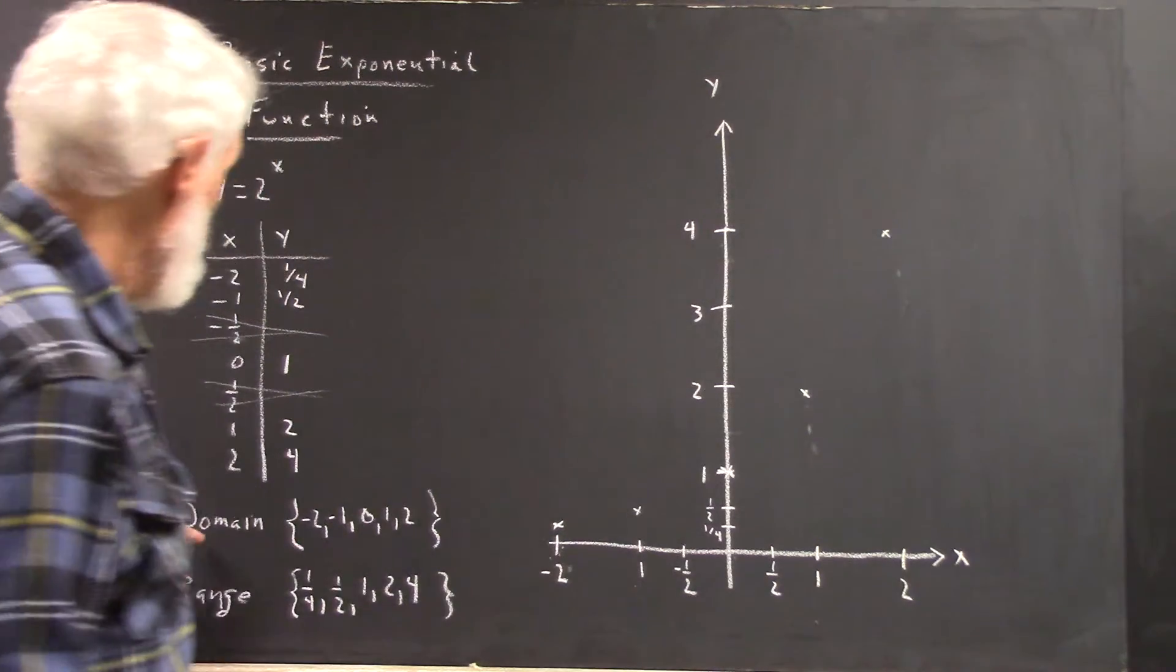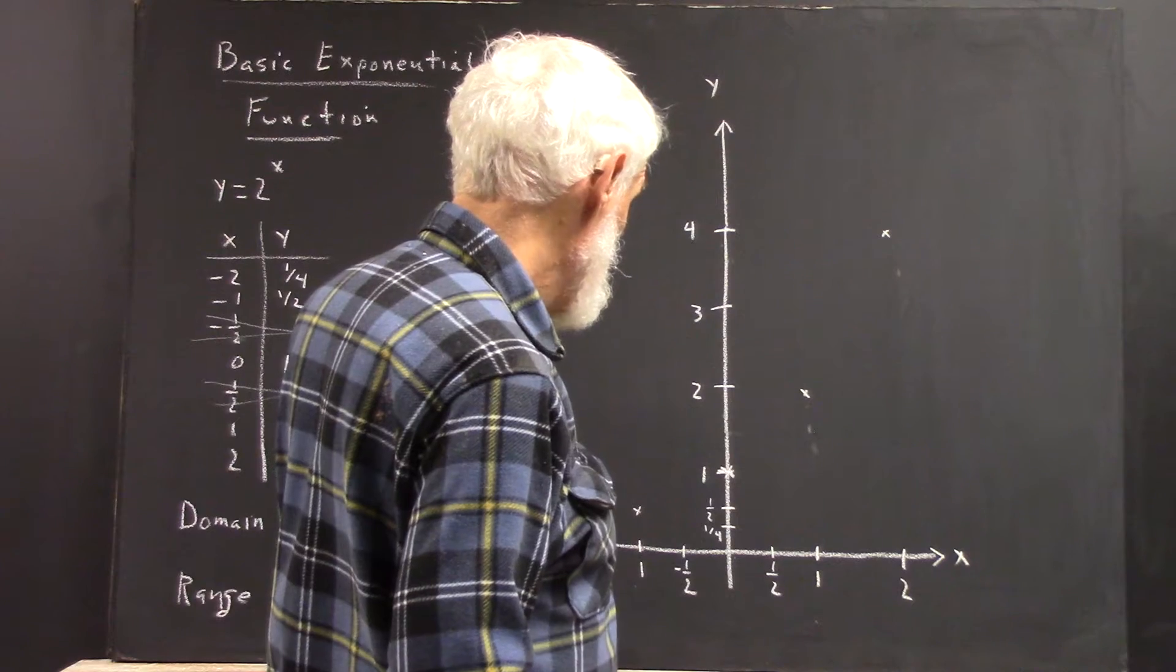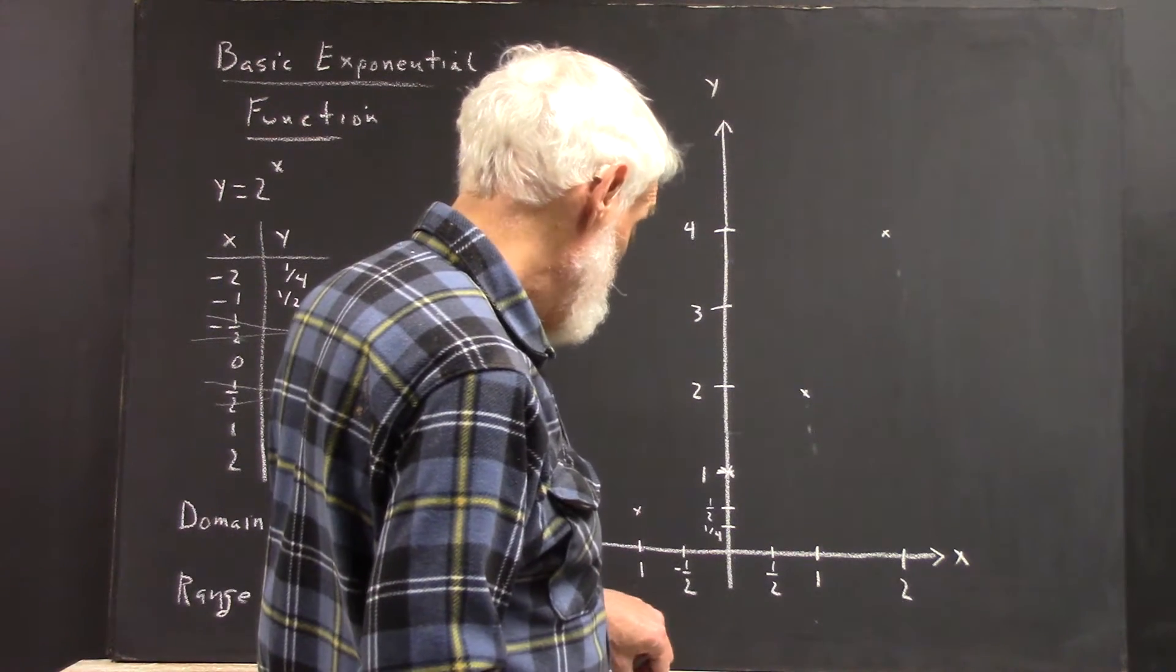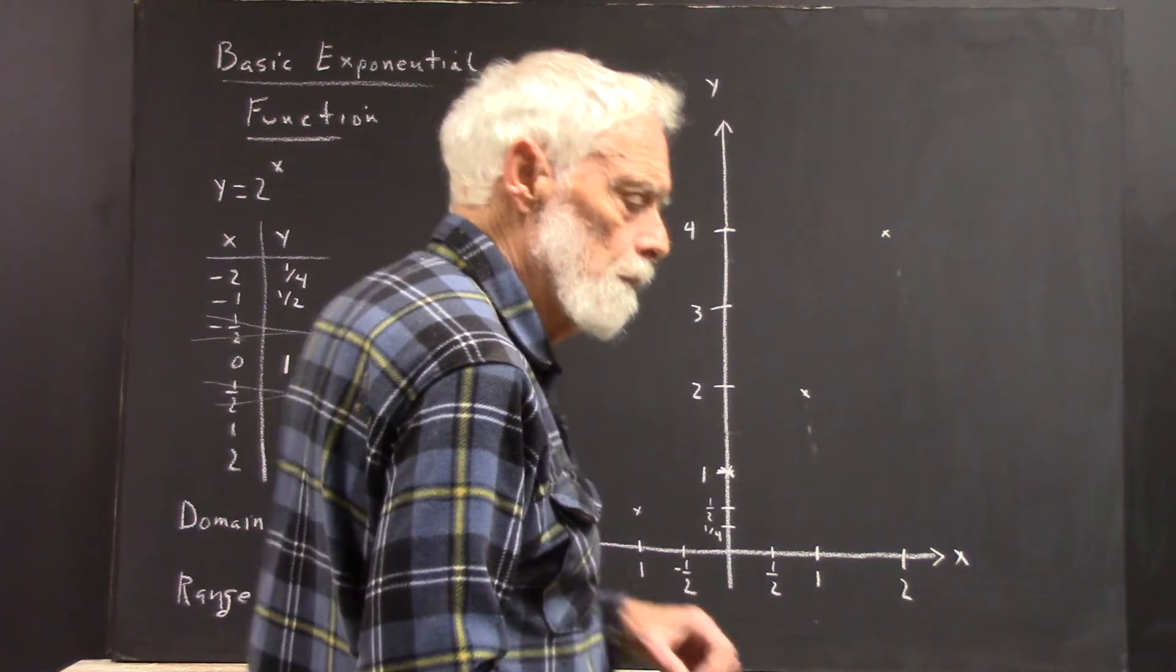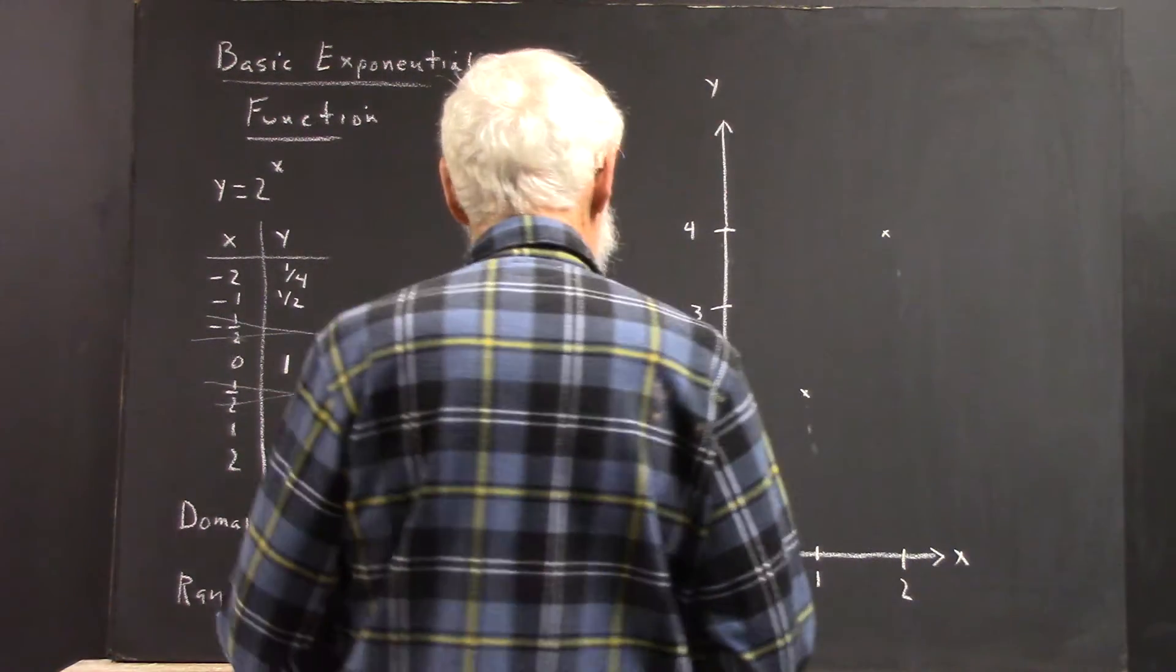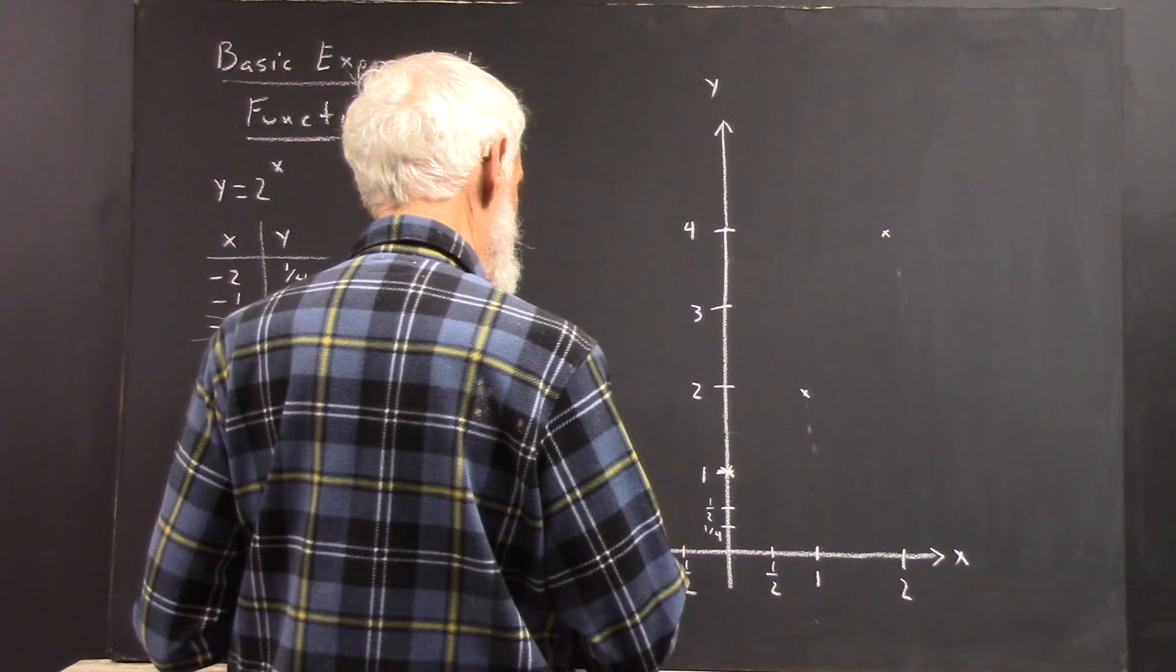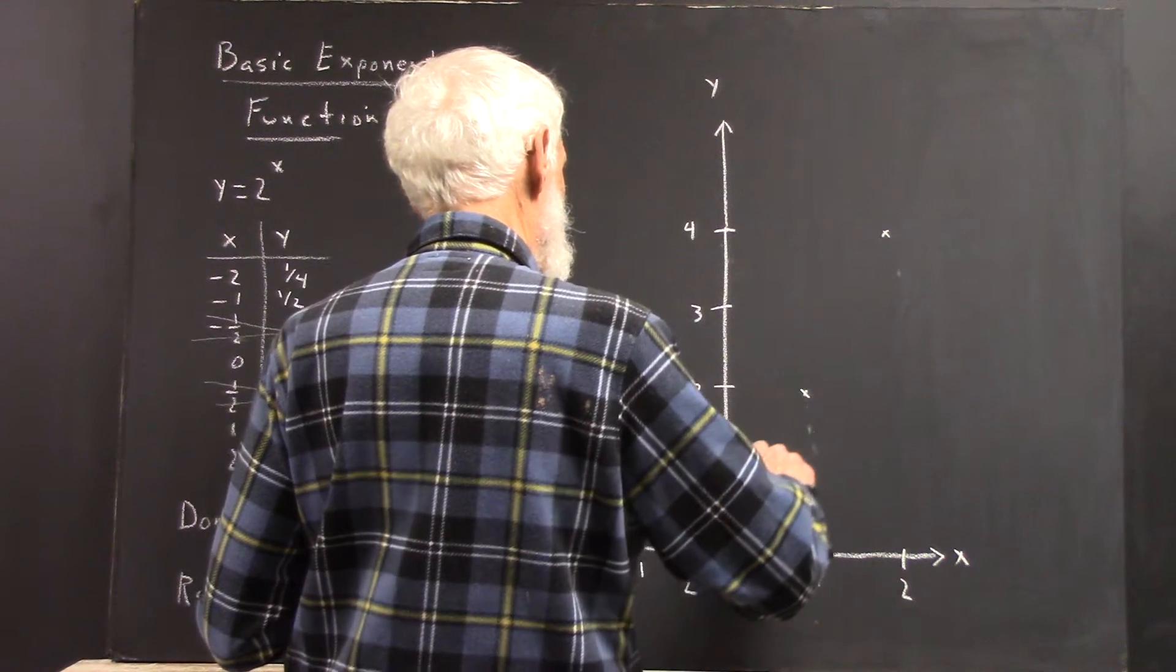There's my graph. There's the domain. There's the range. Now, I can do what I call an extended basic function by sketching a smooth curve through these points.